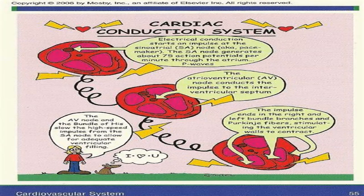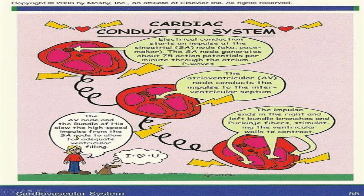The cardiac conduction system again: we see the electrical impulse starts in the SA node, which is your primary pacemaker. The action potential is taking place about 75 times per minute. When that impulse goes down to the AV node and the bundle of His, it slows that high-speed impulse from the SA node so the ventricles can completely fill with enough blood to push out to the body. Then the impulse goes through your left bundle branches and the Purkinje fibers, which stimulate the ventricle walls to contract, and the process starts all over.